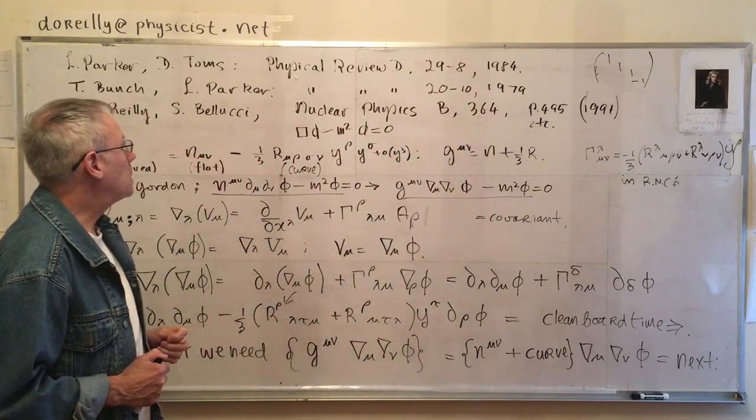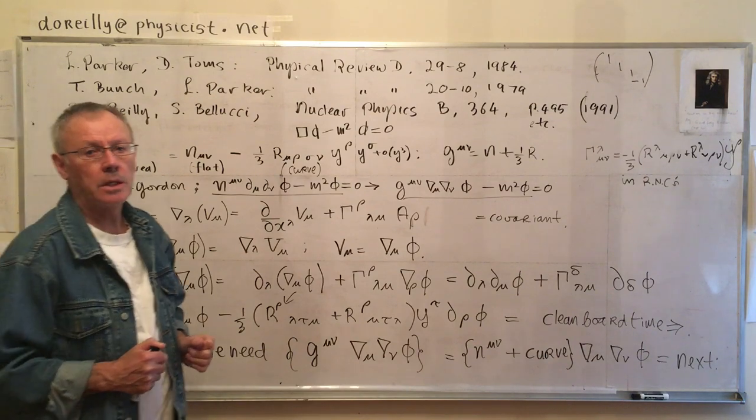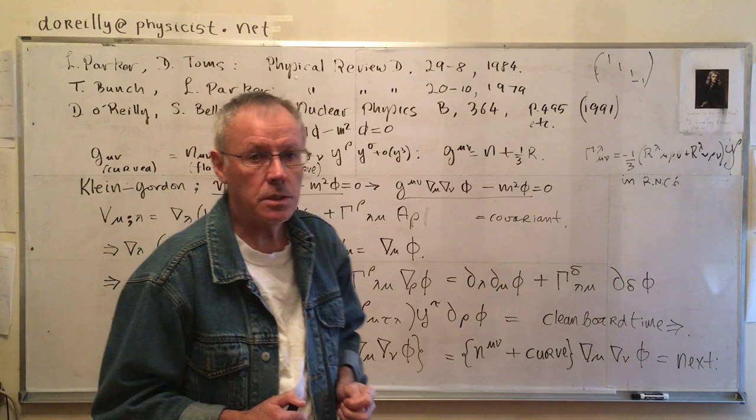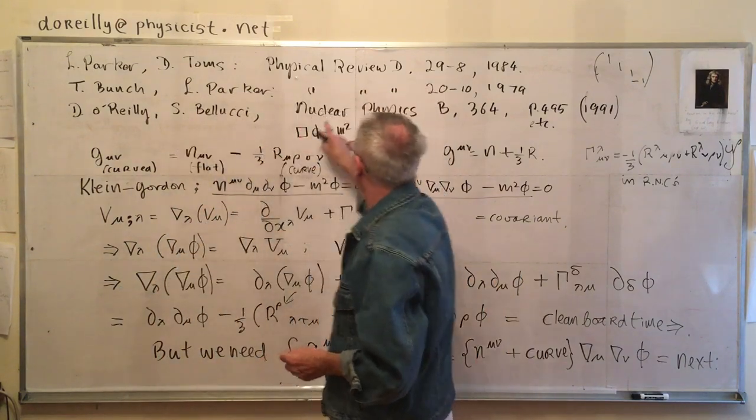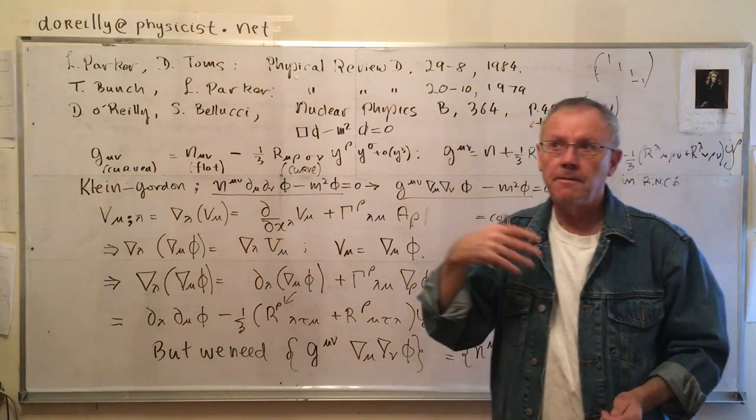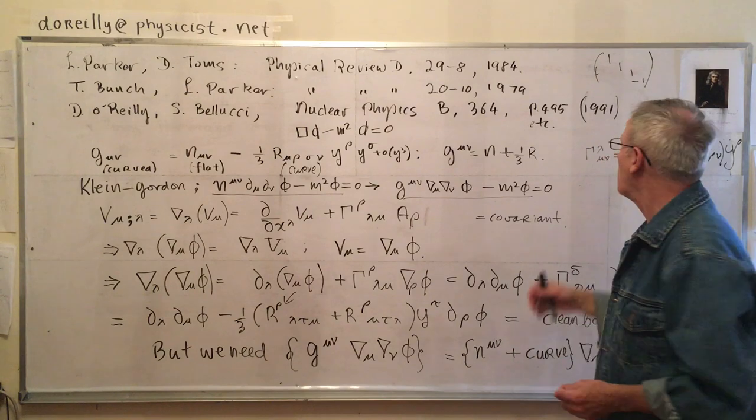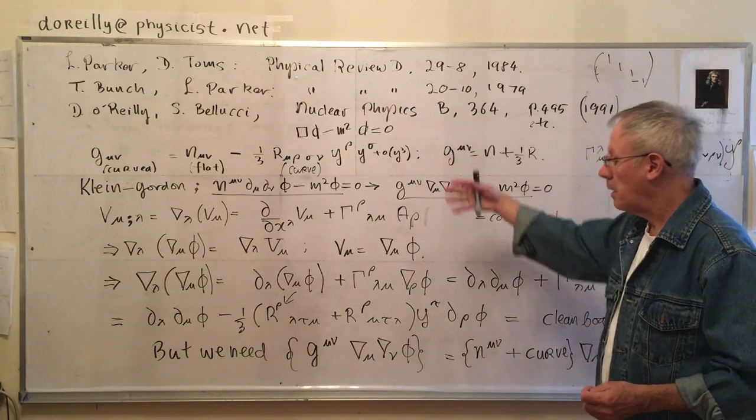And if you actually want to learn techniques of the calculations, especially using the Schwinger-DeWitt expansion, well, there's nothing to beat my own little paper with Belucci. D. O'Reilly and that's Belucci, Nuclear Physics B, 364, page 495 to 515 or something, I forget, 1991. So that's basically what's going on here.